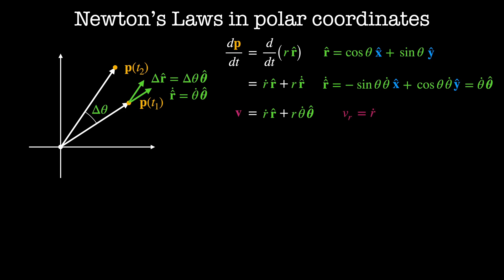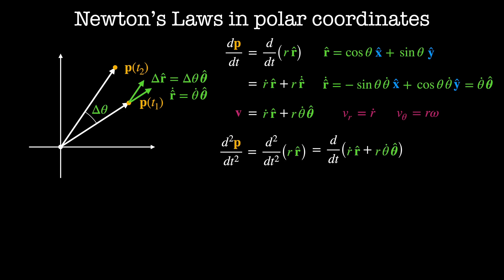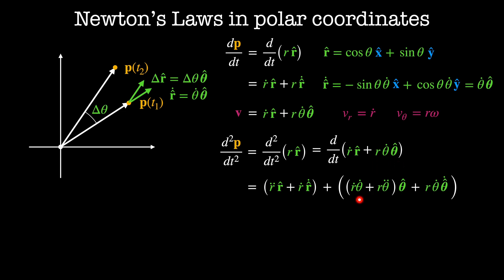The velocity in the r-direction is simply the rate of change of P in the r-direction. Likewise, the tangential velocity is given by r times its angular velocity omega. To calculate the acceleration of P, we need to take another derivative, and again we'll do this using the chain rule. The first term differentiates to r-double-dot times r-hat plus r-dot times r-hat-dot. The second term differentiates to r-dot times theta-dot plus r times theta-double-dot in the theta-hat direction, plus r times theta-dot in the theta-hat-dot direction.